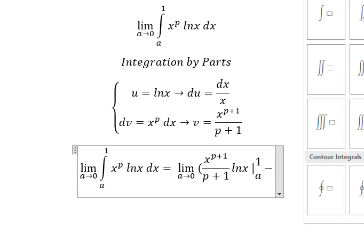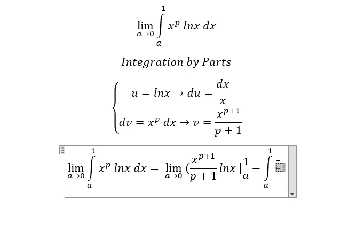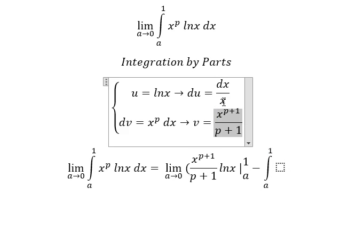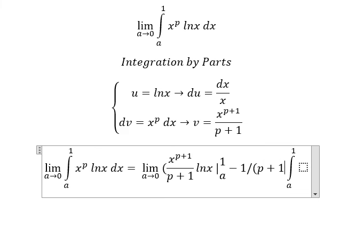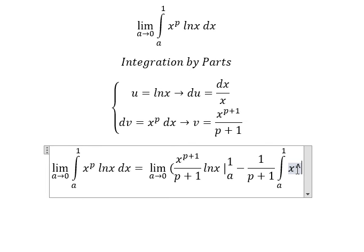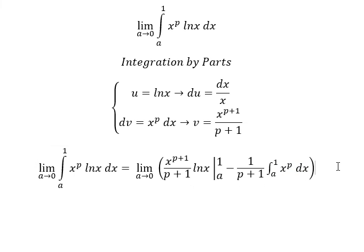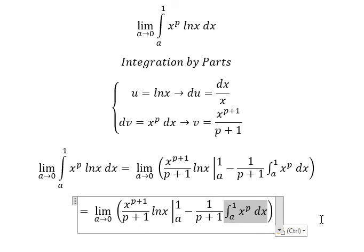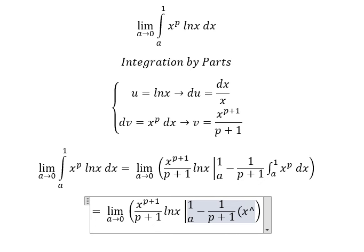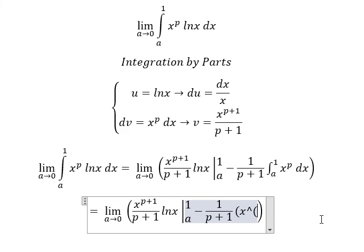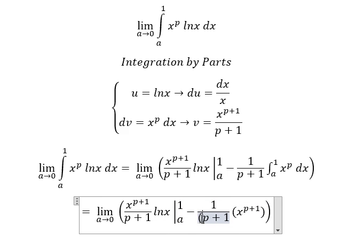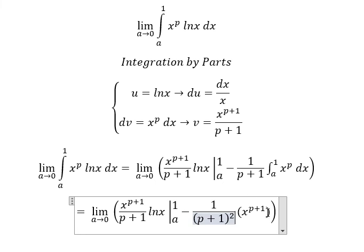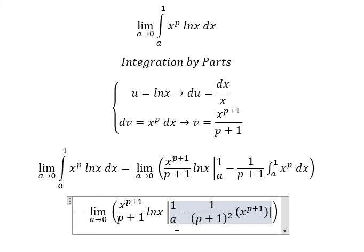Minus we have the integral from a to one. That is this term divided by s, so I will put one over b plus one outside, and we have s to the power of b. The integral of this is s to the power of b plus one over b plus one — so I will write b plus one squared — with bounds from a to one.